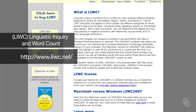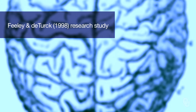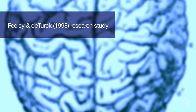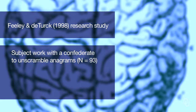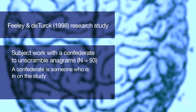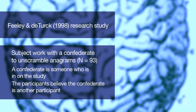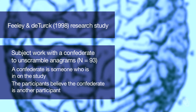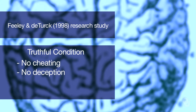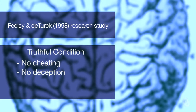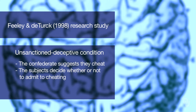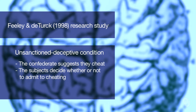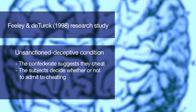Now I want to tell you about a few research studies that informed us about the reliability of verbal cues as a method of deception detection. The first is a study by Feeley and Deterk in 1998. They had participants work with a confederate — someone who's in on the study and works for the experimenter, but whom participants think is just another participant — to unscramble anagrams. They had three conditions: a truthful condition with no cheating, an unsanctioned deceptive condition where the confederate suggests they cheat and subjects later decide whether to confess, and a sanctioned deceptive condition.